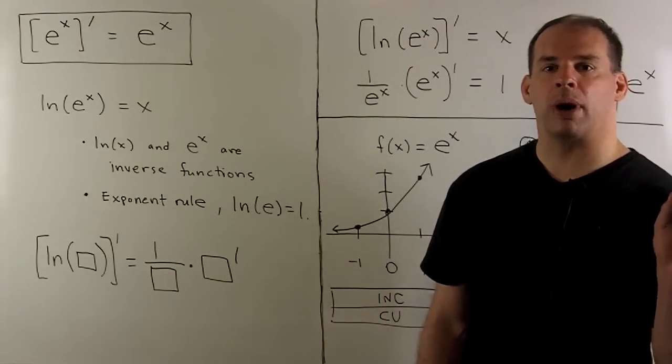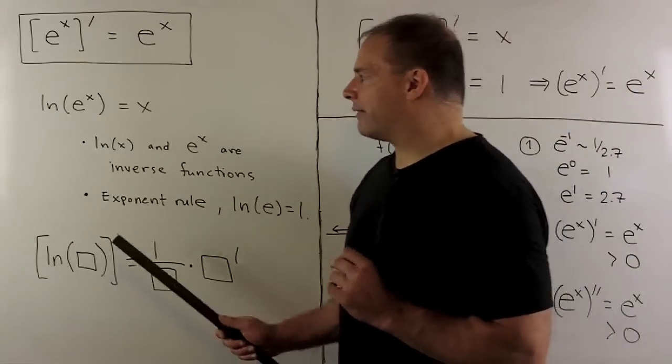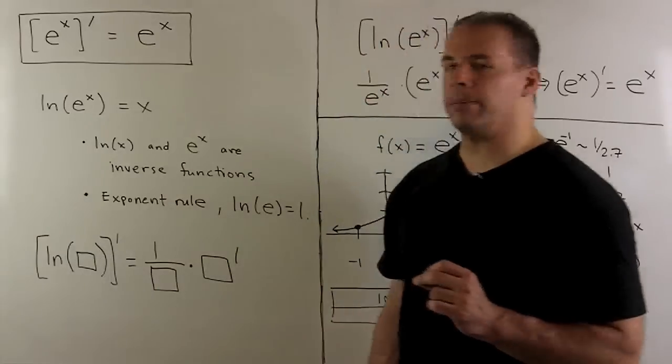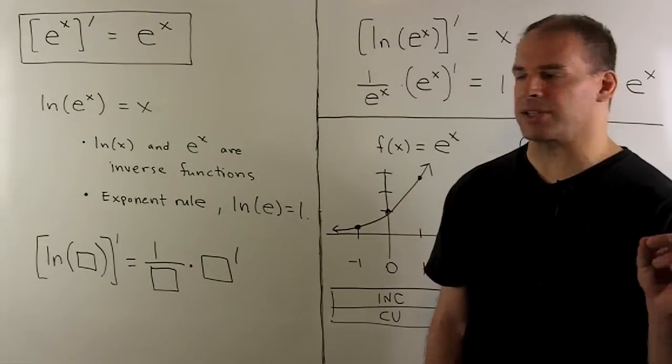Or I could just use properties of natural logarithm. So, we have the exponent rule, which lets me take the x, put it down in front. Then we have that natural log of e is equal to 1. So we're left with x.